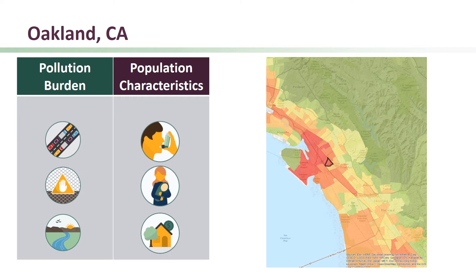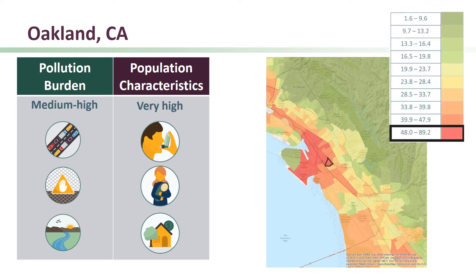The population characteristics score represents different kinds of vulnerability. It is very high compared to the rest of the state, with high scoring indicators like the rate of asthma and babies born low birth weight, as well as housing burden. The combination of the medium-high pollution burden score along with a very high population characteristics score results in an overall CalEnviroScreen score within the top ten percent of scores statewide.